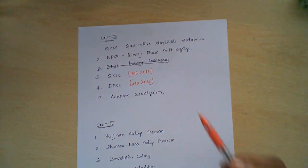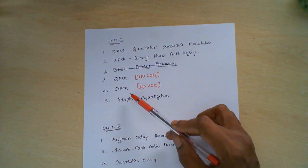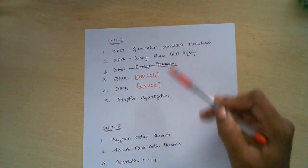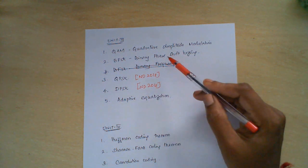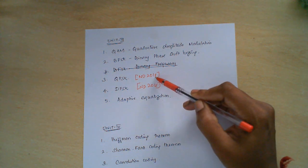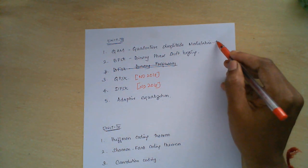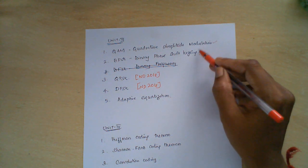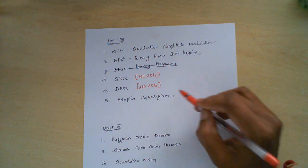Coming to Unit 3, the topics I recommend as important are QAM — quadrature amplitude modulation — binary phase shift keying, QPSK, differential phase shift keying, and adaptive equalization. QAM and BPSK were asked in November–December 2018, so give these three topics priority first, but do not omit QPSK and DPSK as they are also very important. This time QAM can be asked along with BPSK, but if a new topic is expected, then go for adaptive equalization techniques.